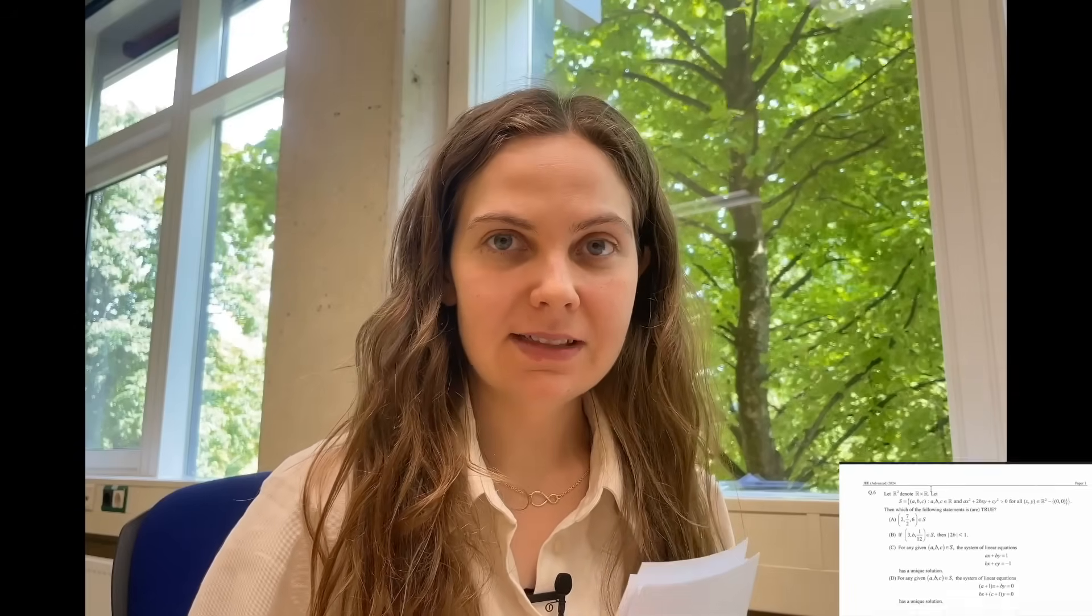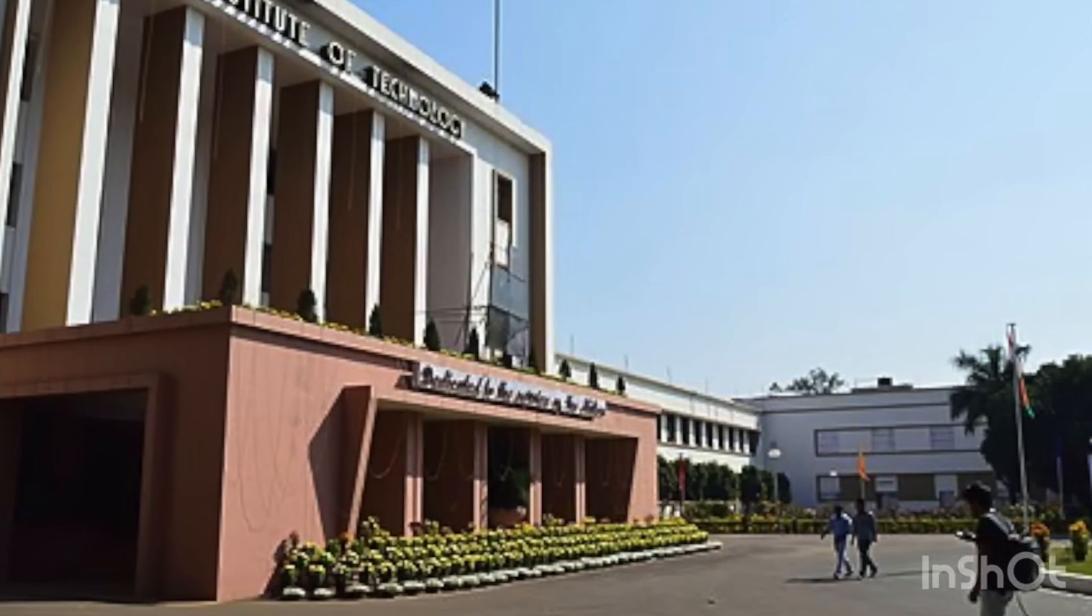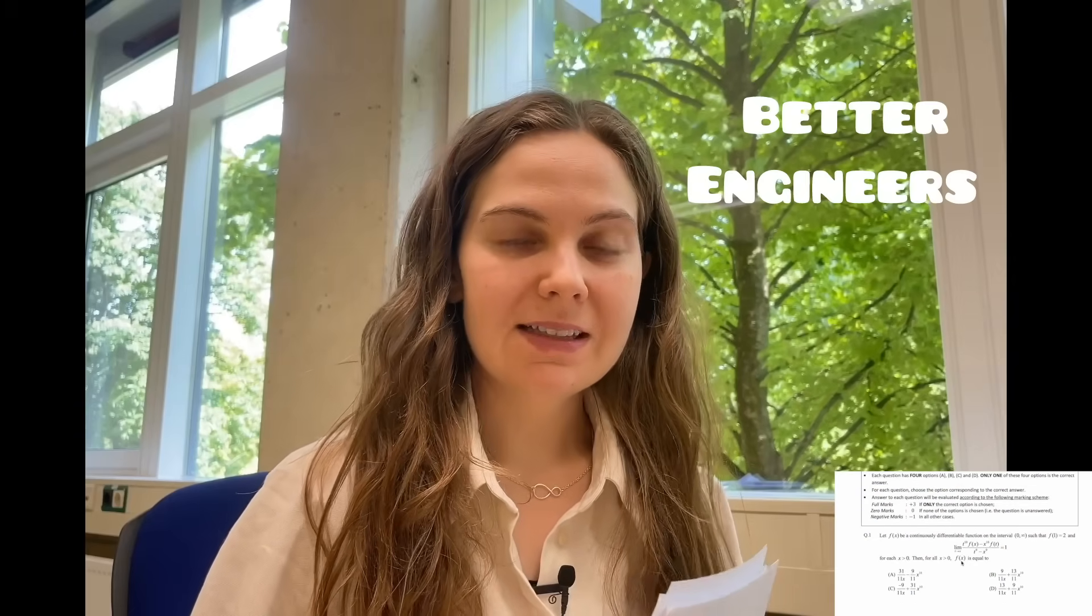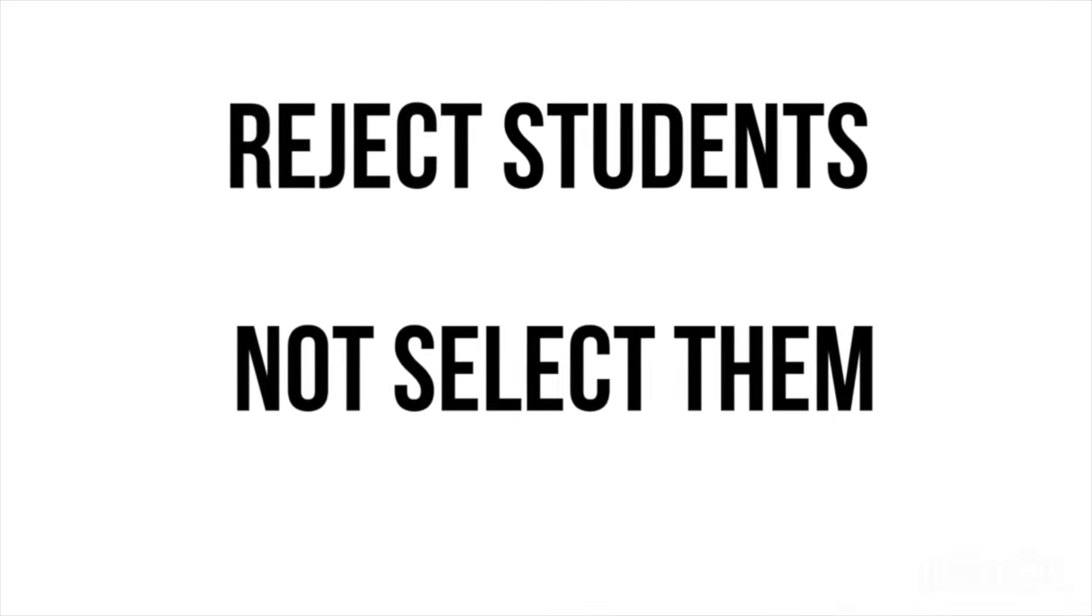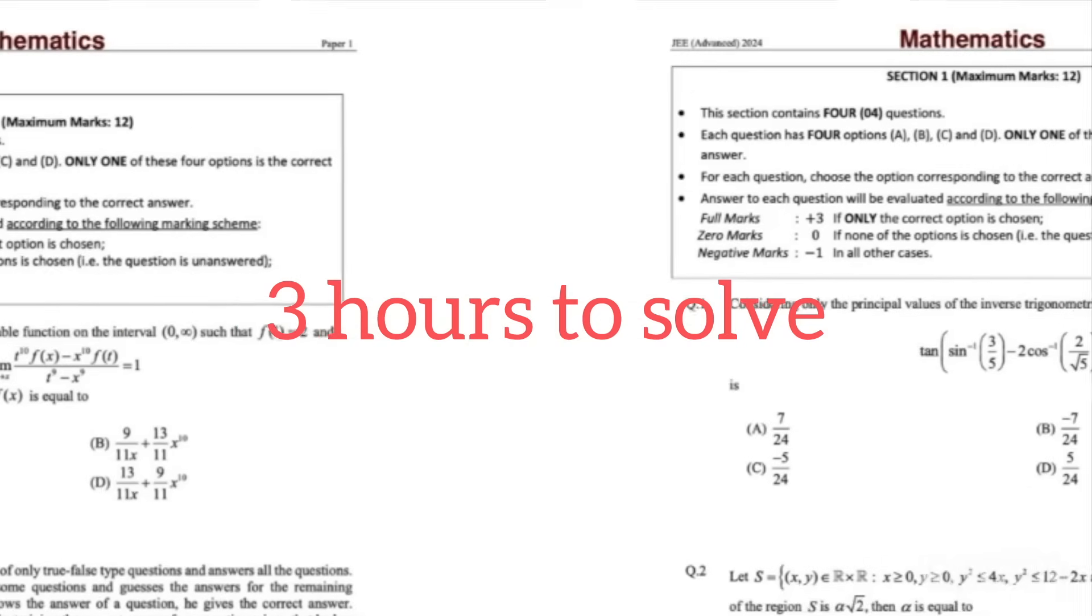The exam was first conducted in 1961 as an entrance examination for the Indian Institute of Technology as a way to make better engineers. However it has been said that the exam is made to reject students rather than select them. The exam consists of two papers that the students are given three hours each to solve with a break in between and the questions cover the topics of mathematics, physics, and chemistry.